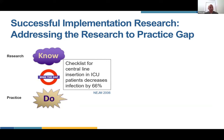Despite the publication of this result in the New England Journal of Medicine, very few changes were occurring and infection rates remained quite high across ICUs around the world. What people in this field recognized was that simply having this checklist was not enough. We need to figure out what the barriers and facilitators are — what will make people actually change their behavior to adopt the checklist. Simply having it in front of them is not enough.